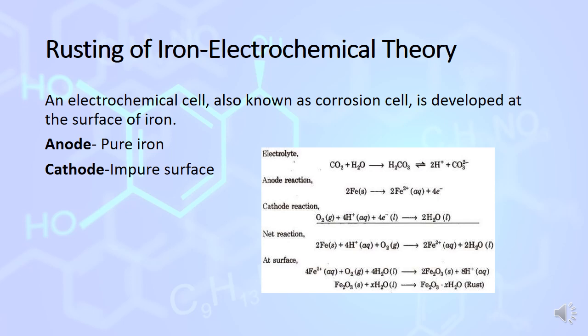Overall reaction: iron is oxidized to Fe2+ ion. At the surface, Fe2+ ion plus oxygen plus water gives ferric oxide Fe2O3. This ferric oxide combines with water molecules, X water molecules, to form Fe2O3·XH2O. A brown layer is formed at the iron where the rusting takes place.